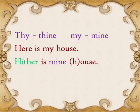'Here is my house' becomes 'hither is mine house.' My follows the same rule as thy, so whenever it is followed by a vowel or an h, my becomes mine. 'Hither is mine house.'